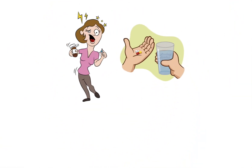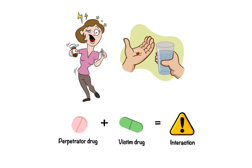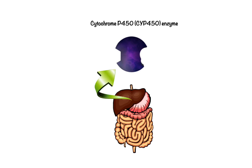Drug-drug interactions occur when one drug, the perpetrator drug, alters the disposition of another co-administered drug, the victim drug. The most common mechanism causing drug-drug interactions is inhibition of cytochrome P450 enzymes, which are expressed mainly in the liver and gut mucosa, where they play an important role in the clearance of various compounds from the bloodstream.